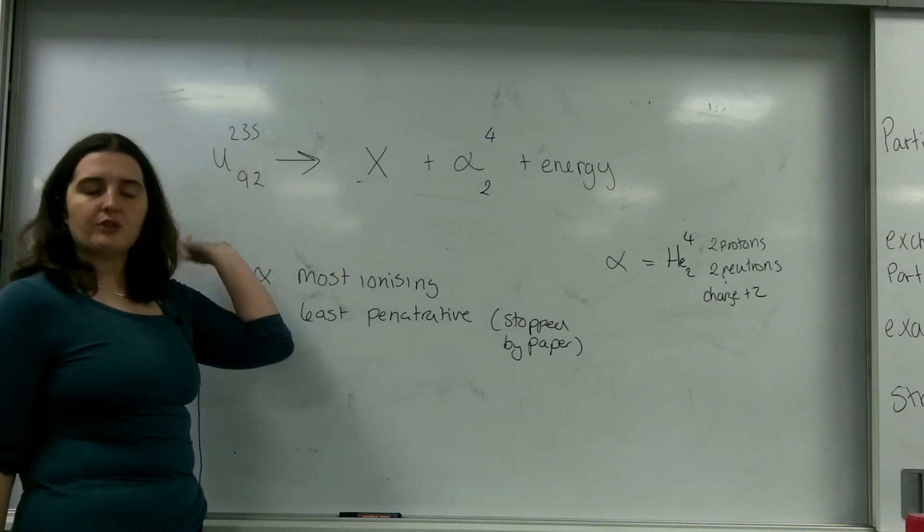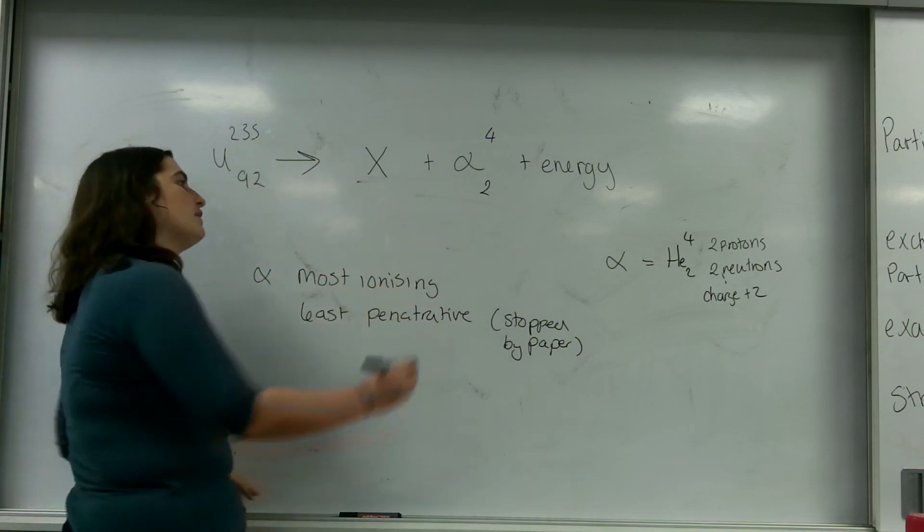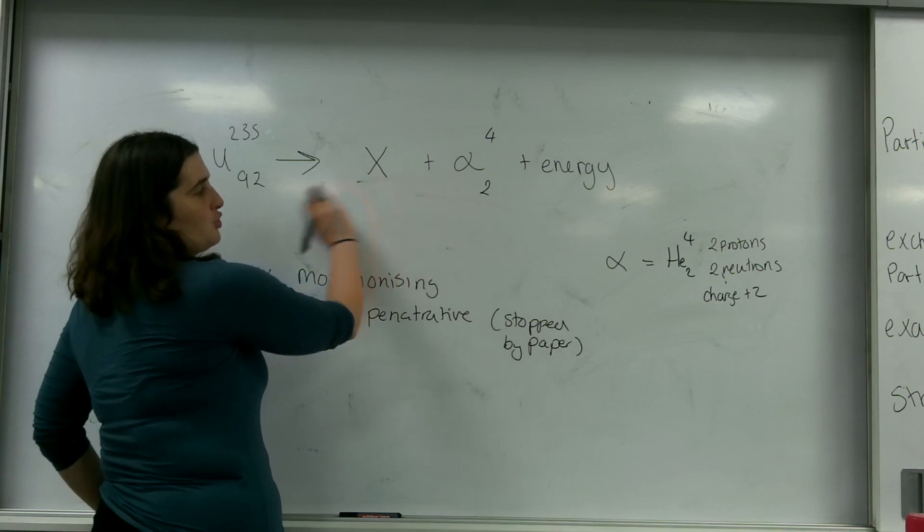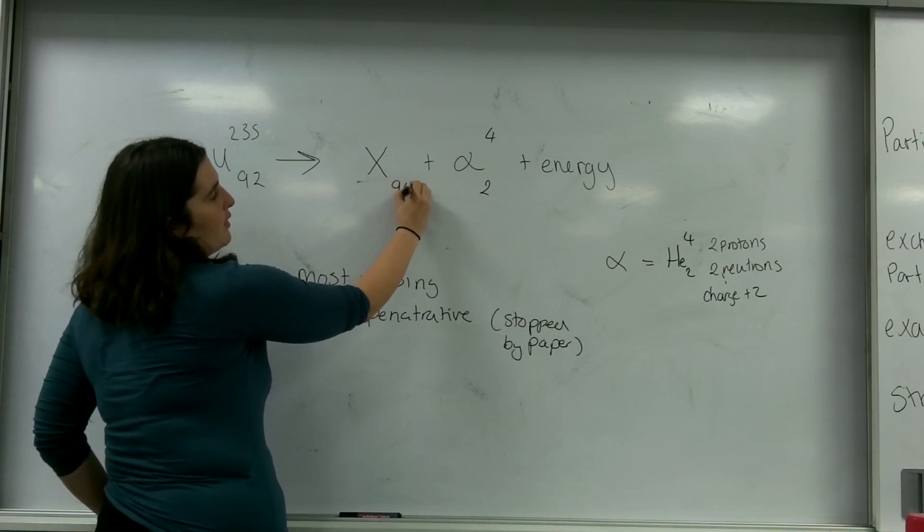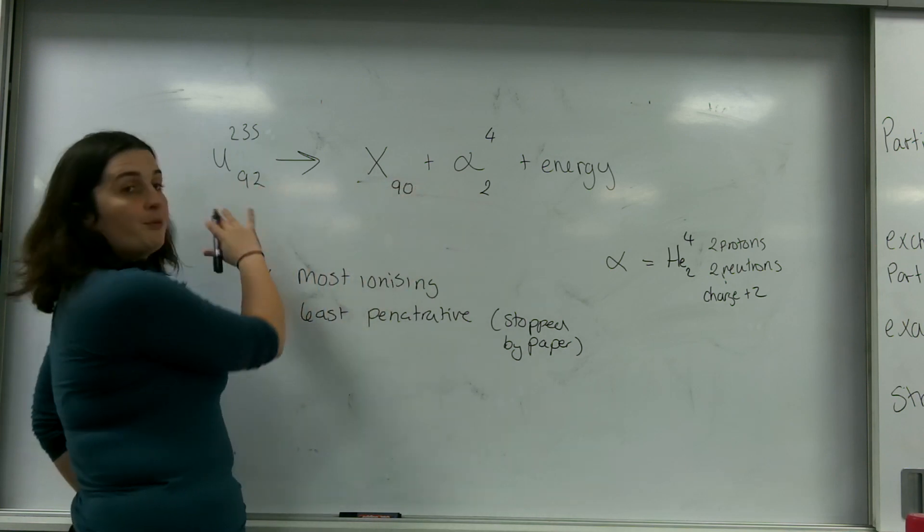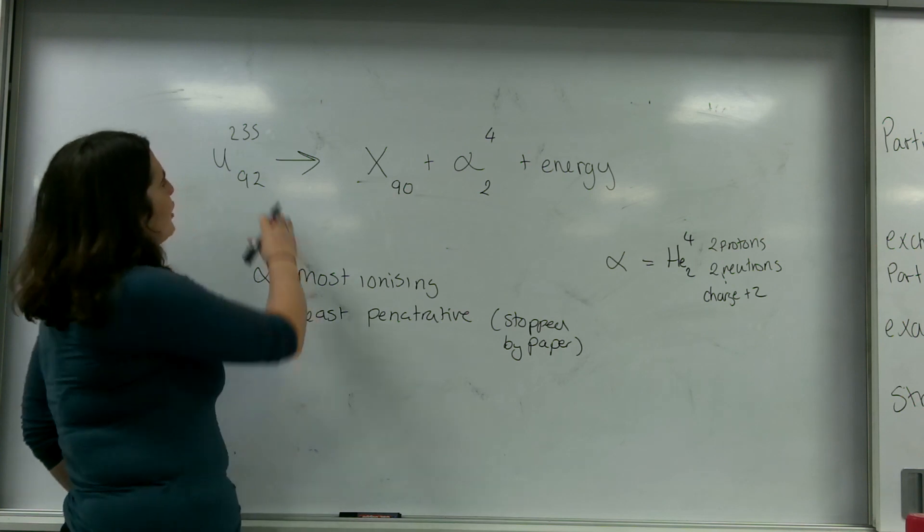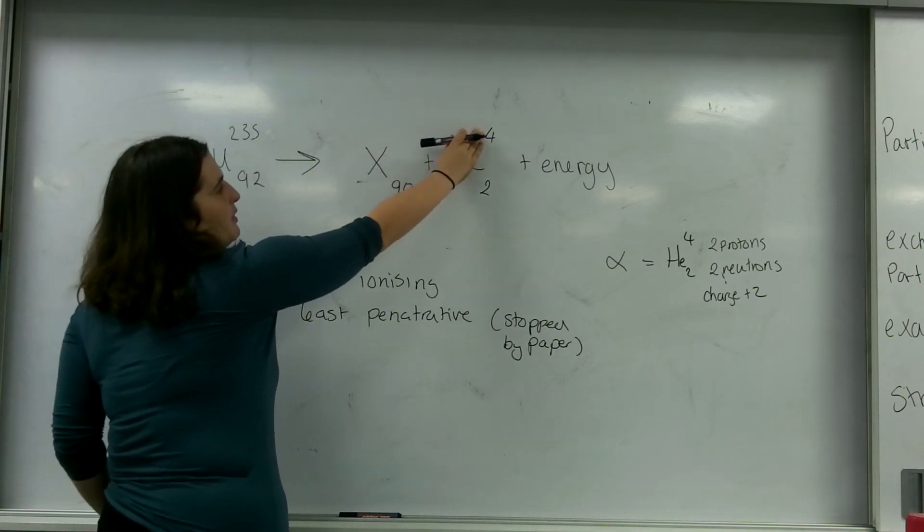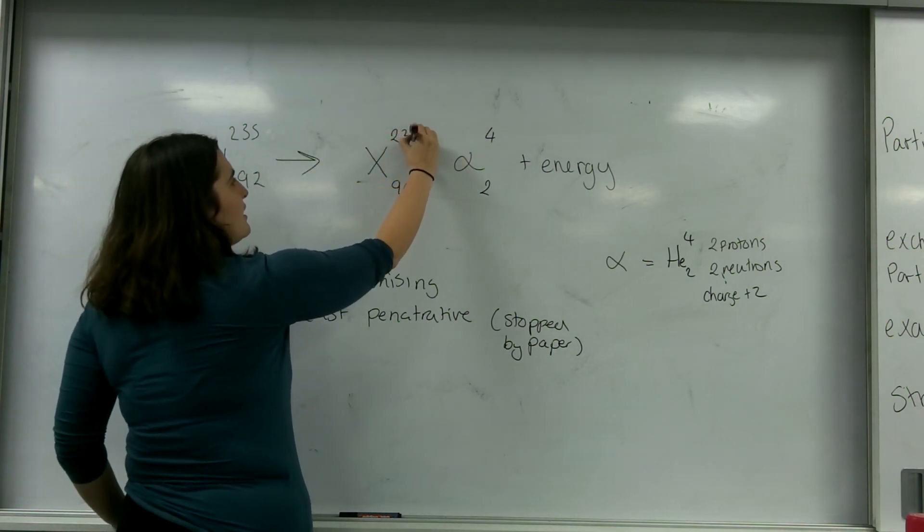So the number of protons I have on this side has to equal the number of protons I have at this side. So something plus two will be 92. So that will be 90. And the number of neutrons at the top. So 235. So something plus four is 235. And that is 231.